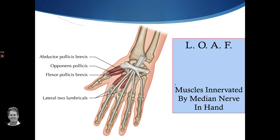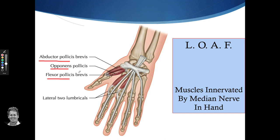In the hand, the median nerve supplies muscles remembered by the acronym LOAF. The palmar digital branch supplies the lateral two lumbricals — that's the L. The recurrent branch of the median nerve supplies the OAF: the Opponens pollicis, the Abductor pollicis brevis, and the Flexor pollicis brevis. These muscles make up the thenar eminence within the hand.